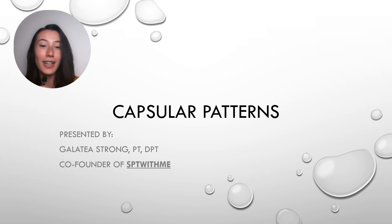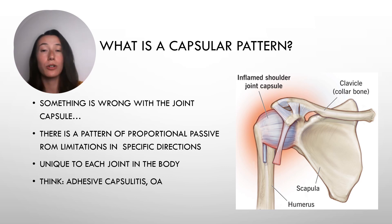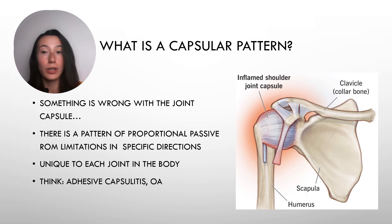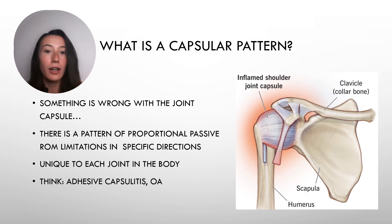Now onto what you're actually here for, let's talk about capsular pattern. First off, what is a capsular pattern? The best way to describe this is to actually picture what's going on. Let's use this example of the shoulder joint. Realize that even though we are talking about the shoulder joint, this can be translated to any joint in the body — think about the knee, the hip, the elbow, etc.